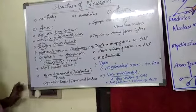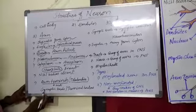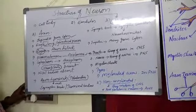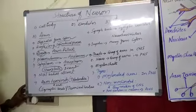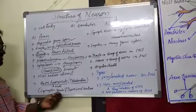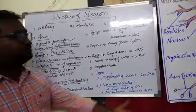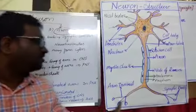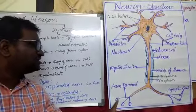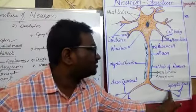These are the collateral branches that arise from the axon. The axon terminals have bulb-like structures, and these bulb-like structures are called as synaptic knobs, also called terminal buttons. See here — this is the axon, and these collateral branches are called as axon terminals.